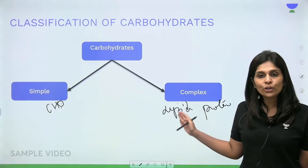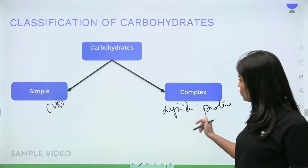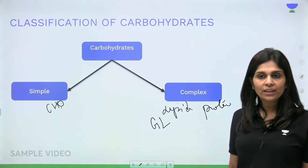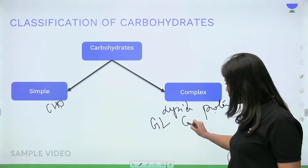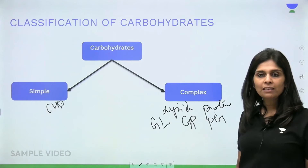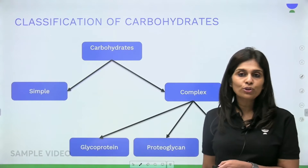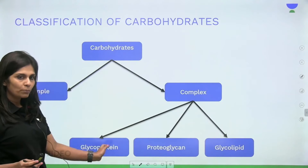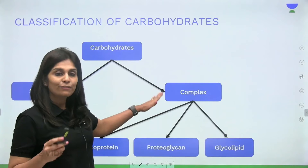What are the types of complex carbohydrates? If a carbohydrate is attached to a lipid, you call it a glycolipid. If a carbohydrate is attached to a protein, you call it a glycoprotein or a proteoglycan. So the three types of complex carbohydrates are glycolipids, glycoproteins, and proteoglycans. We will discuss complex carbohydrates in a different video.